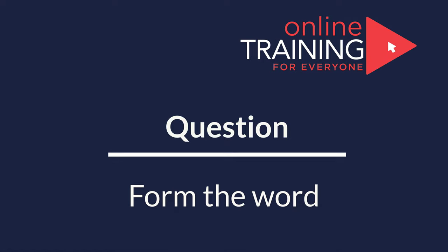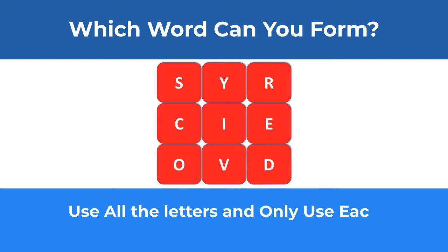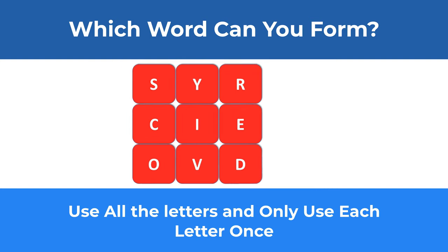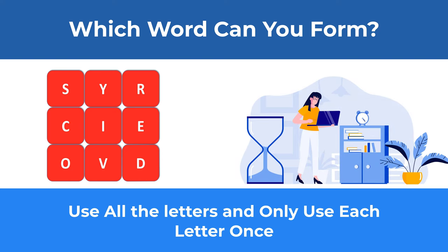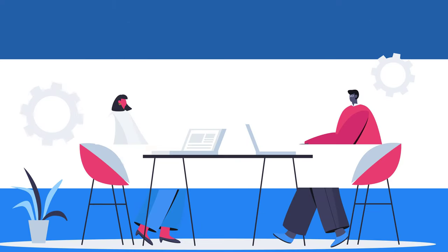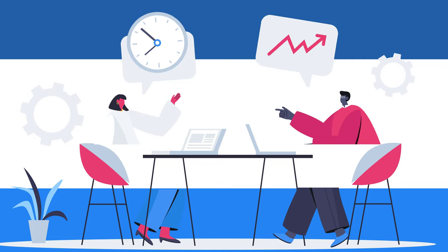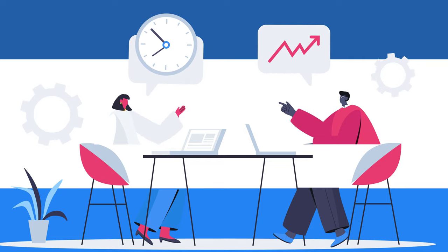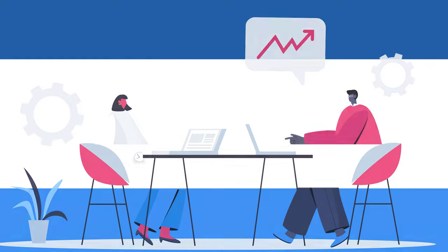Let's look at an interesting question where you need to form a word using all the letters, each only once. You're presented with nine letters: S, Y, R, C, I, E, O, V, D. Do you see the solution? Give yourself maybe 10 to 20 seconds — this is typically as much time as you get in a real test. Ready or not, I am going to reveal my version of the solution, but my version may not be the only one, so if you see other possible options, please make sure to share them in comments.